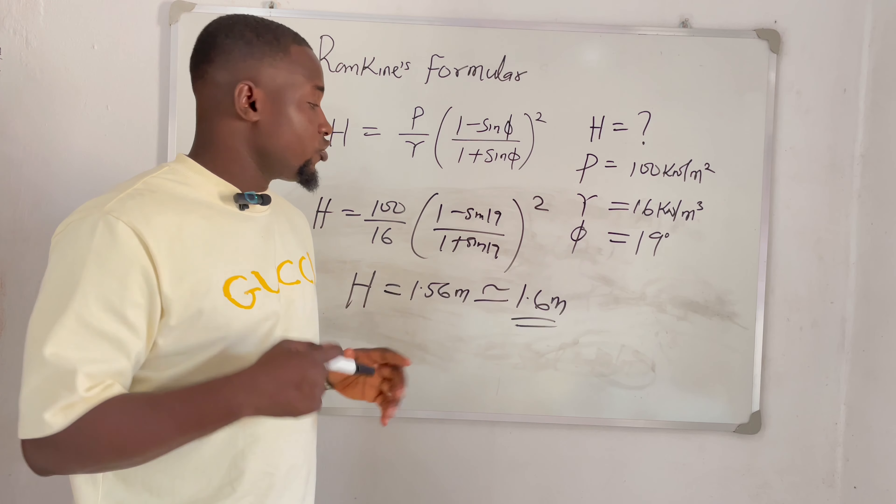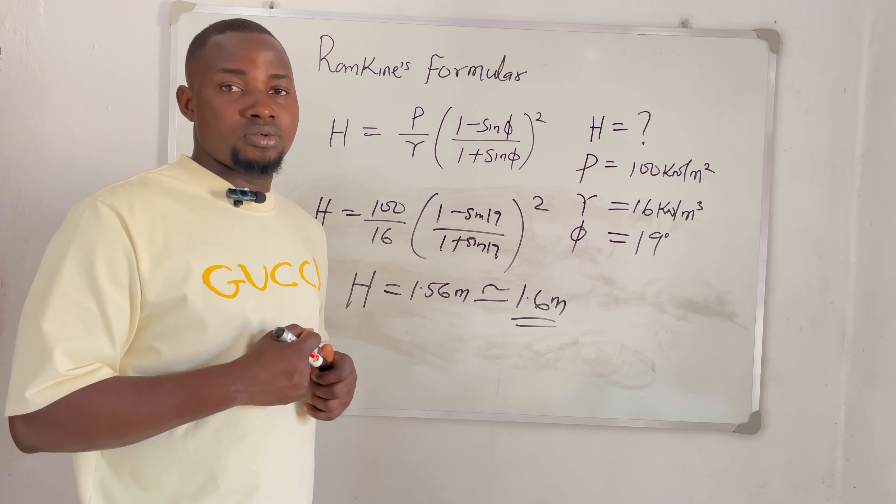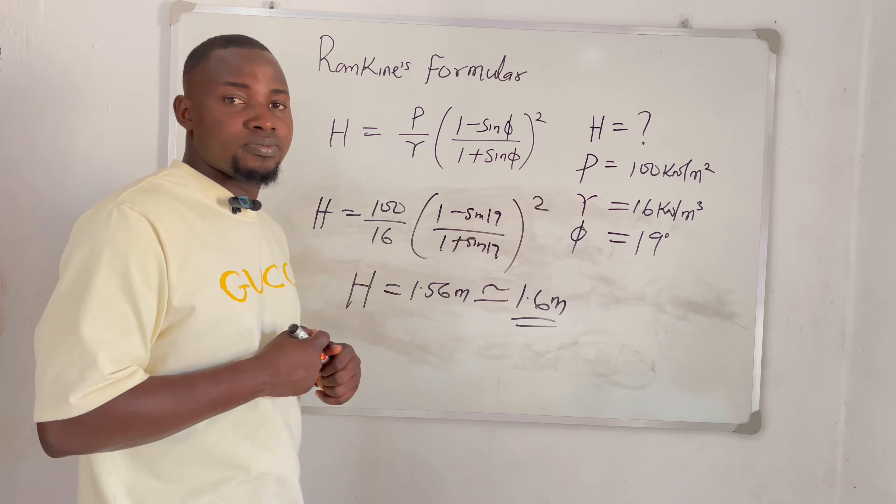If I'm to determine the minimum depth I am supposed to excavate at my site, I substitute into the formula. The minimum depth equals 100 kN over 16 kN, multiplied by (sin 19 / (1 + sin 19)) squared. If we simplify this, the minimum depth of my foundation is 1.56 meters, which can be approximated to 1.6 meters. So the minimum depth I'm supposed to excavate at my site is 1.6 meters.